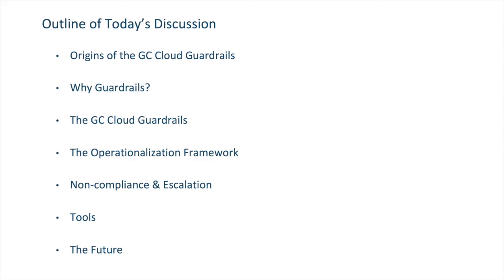We're going to talk about what the guardrails actually are and what guardrails need to be respected. We're going to talk about the operationalization framework, which is the process around the guardrails. We're going to talk about what happens when a department is non-compliant with the guardrails and the escalation process. We're going to talk about some of the tools the community has created — there have been some great contributions there — and finally, we'll talk about the future of the guardrails.